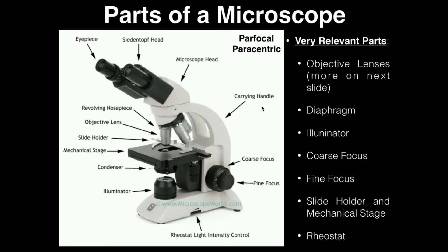This is like a turret right here, or a nosepiece, and it revolves. You can switch between these objective lenses, and you'll find that out and be able to operate it when you get into the lab.